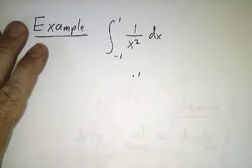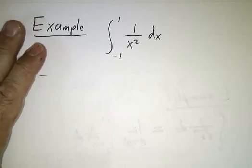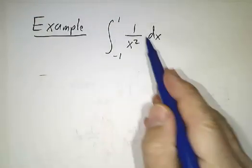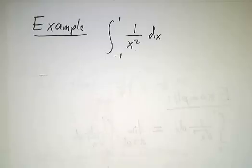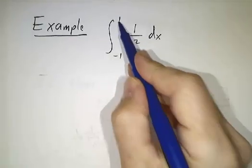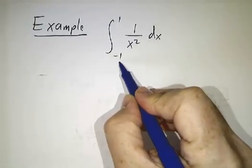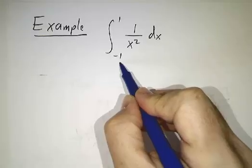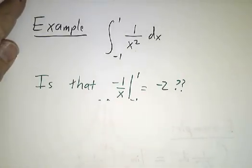Now, here's a warning. Here is a mistake that a lot of people make. If you see an integral like the integral from negative 1 to 1 of 1 over x squared dx, it's not blowing up at x equals 1 and it's not blowing up at x equals minus 1. So you might be tempted to do it as an ordinary integral.